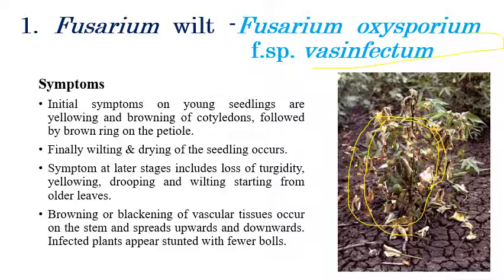In later stages, loss of turgidity, yellowing, dropping of leaves, and wilting of leaves can be observed. At the final stage, complete wilting or drying of seedlings can happen. Browning and blackening of vascular tissue can also be observed on the stem, spreading from the downward to the upward direction. The Fusarium wilt infected plant will produce fewer bolls.